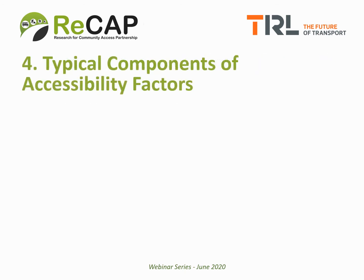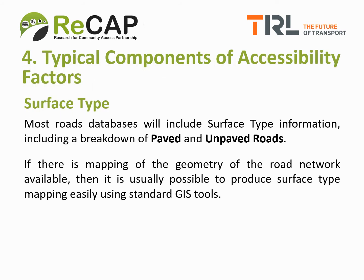We'll now look at some typical components of accessibility factors. The surface type of a road is important in defining accessibility factors because unpaved roads are more vulnerable to damage and therefore more likely to be unavailable than paved roads. Most roads databases will include surface type information, including a breakdown of paved and unpaved roads. If there is mapping of the geometry of the road network available, it's usually possible to produce surface type mapping fairly easily using standard GIS tools. Other information such as road classification and maintenance regimes may also be relevant.